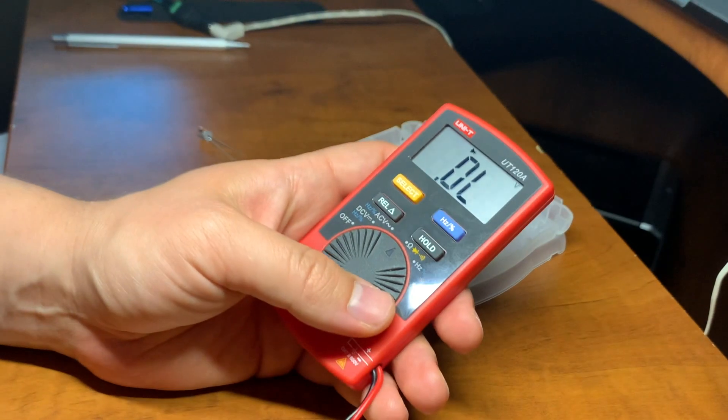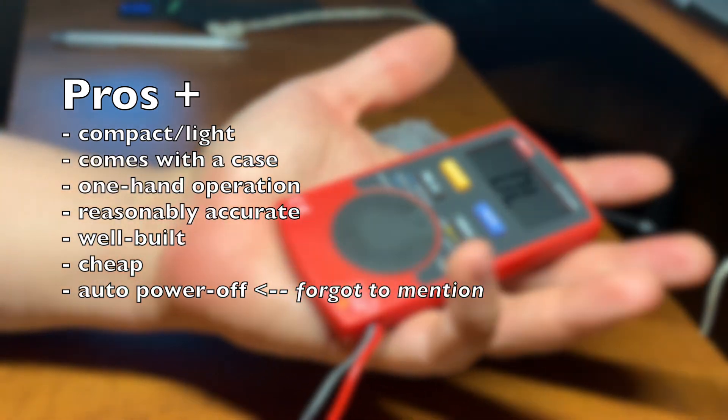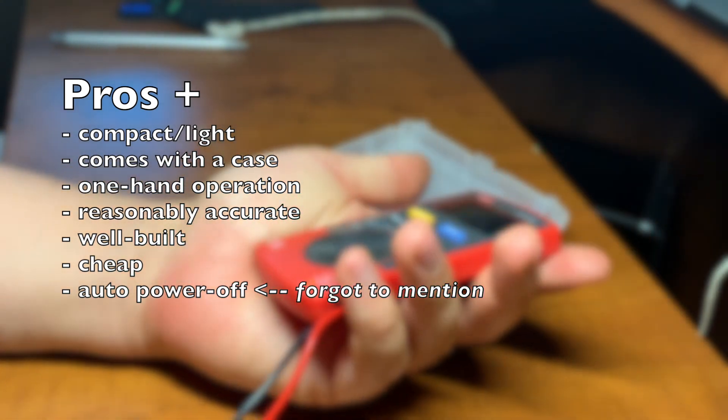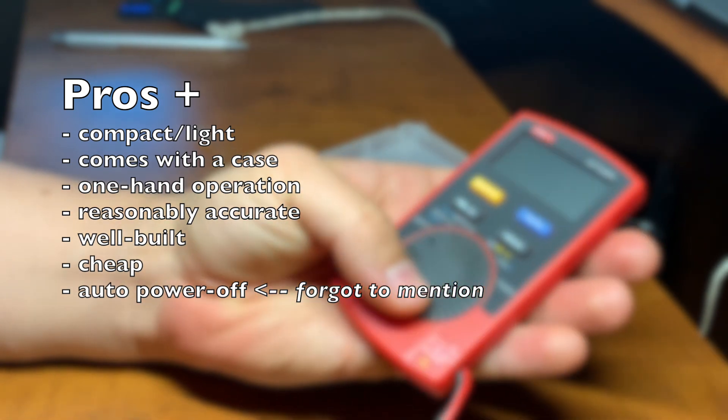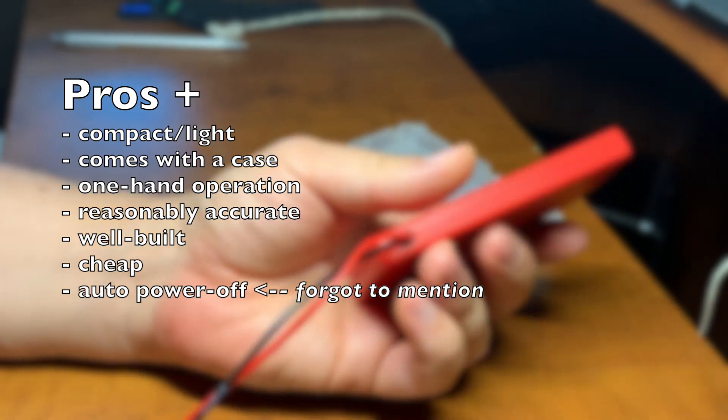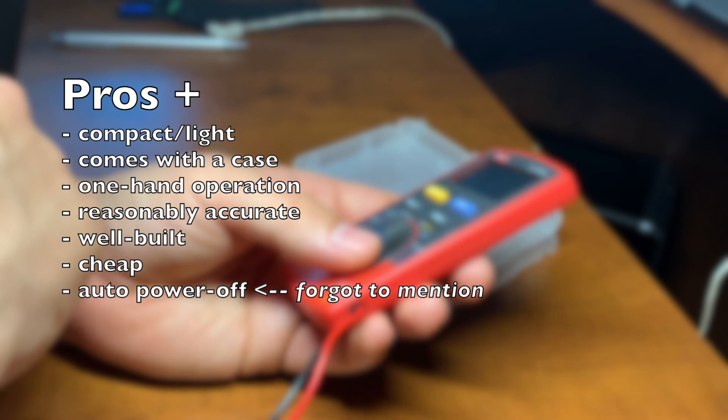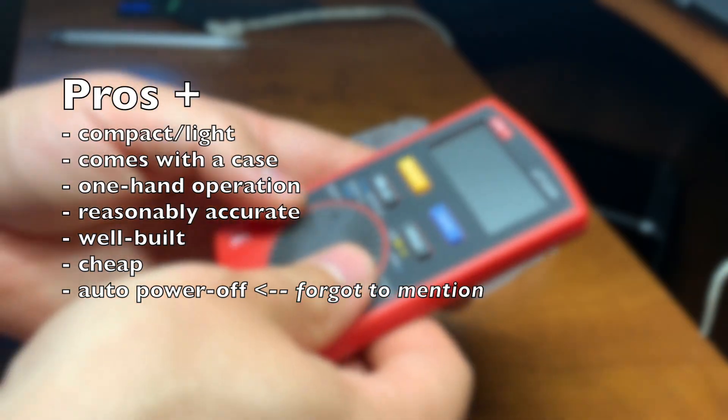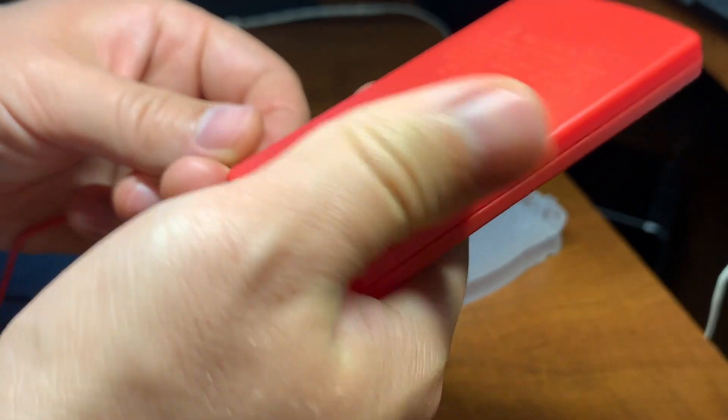Let's go over some of the pros and cons of this multimeter. So for the pros, it's very compact. As you can see, it comes with a case. It's very easy to operate one hand. It is reasonably accurate, good enough for 90% of the work I did. It's fairly well built. Metal thread for the screw, strain relief on the cables. And it's really cheap for 15 to 20 dollars. This is a very good multimeter.